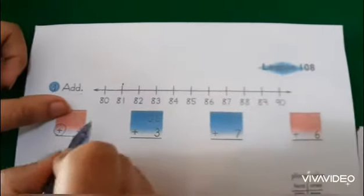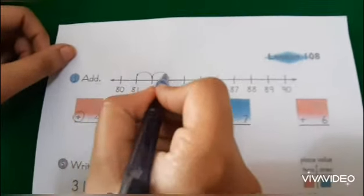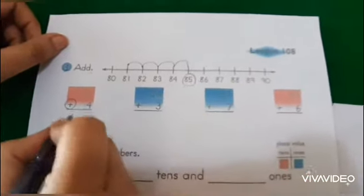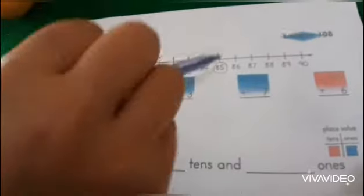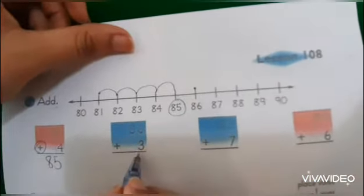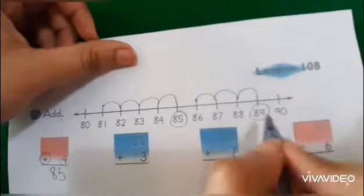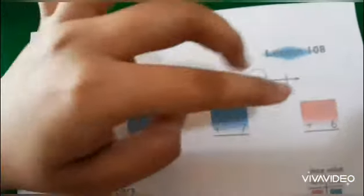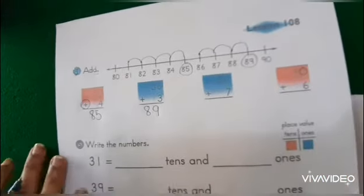Let's see what we have here in our books. Here we have 81. Let's see where 81 is on the number line — here this is 81. Now we have to add 4 to it. Let's hop 4 times: 1, 2, 3, 4. The answer is 85. Now the next one: 86. This is my 86 on the number line. How many do I have to add? 3. So let's hop 3 times: 1, 2, 3. The number is 89. I'm going to leave these 2 for you guys to do on your own.